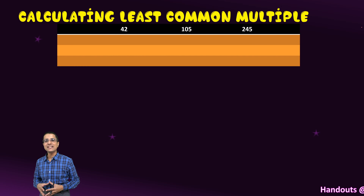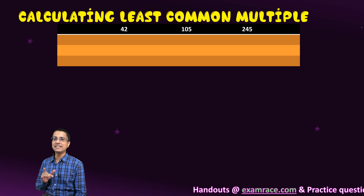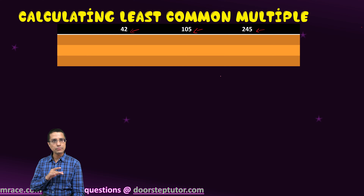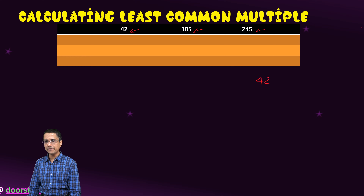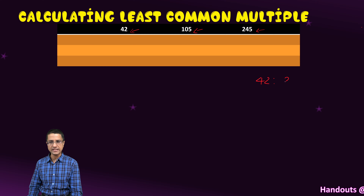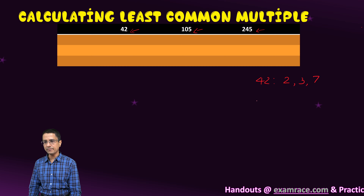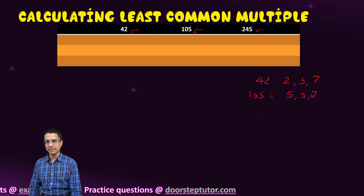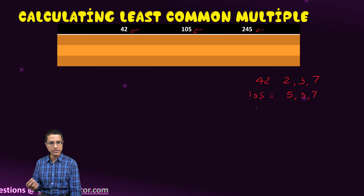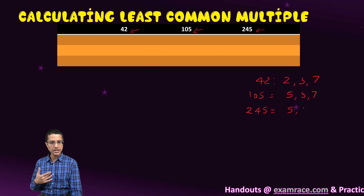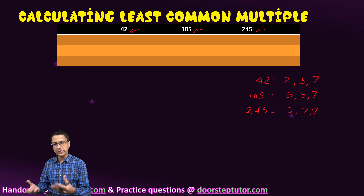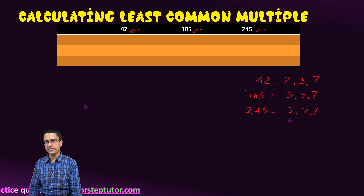Now let us move on and understand how we can calculate LCM. We will discuss 2 methods of calculating the LCM, considering these 3 numbers. The first method is by prime factorization. We write down the numbers in terms of their prime factors. So for 42, the prime factors are 2, 3, 7, and for 105 the prime factors are 5, 3 and 7. The prime factorization is not very difficult — you start by dividing by the smallest factor.